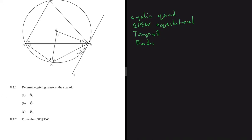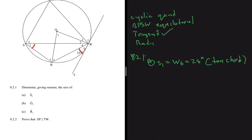8.2.1a: determine the size of S1. S1 is not a complete angle, so we can't immediately use the cyclic quad. S1 is not in triangle PSW either. We use the tangent: W5 lies between TW and RW, and RW subtends S1, so S1 equals W5, which equals 25 degrees — by the tan-chord theorem.